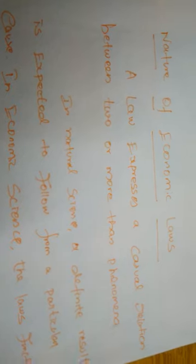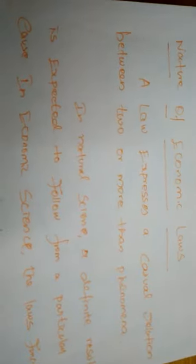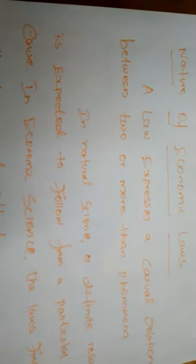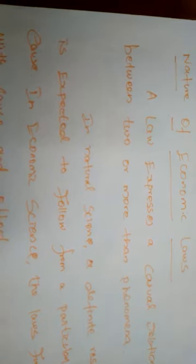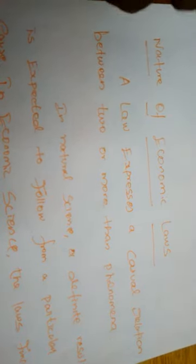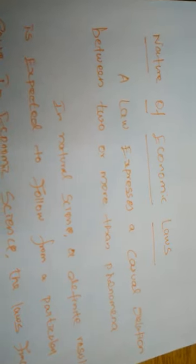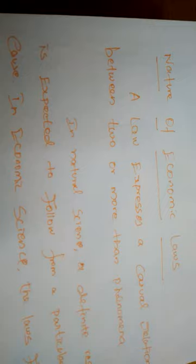Next is the nature of economic laws. A law expresses a causal relationship between two or more phenomena. For example, taking the law of demand, two phenomena occur: the price of a commodity is increasing — that is one phenomenon — and the quantity demanded is decreasing — that is another phenomenon. The law only expresses the causal relationship between two or more phenomena, explaining on which basis those phenomena occur.